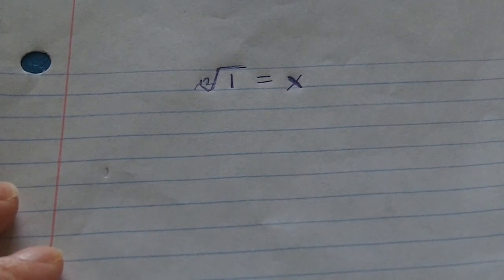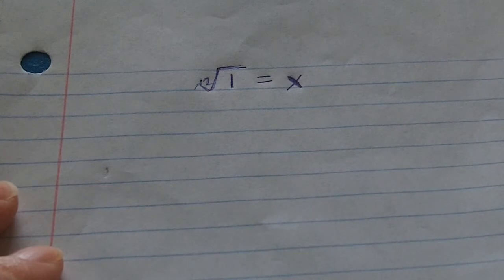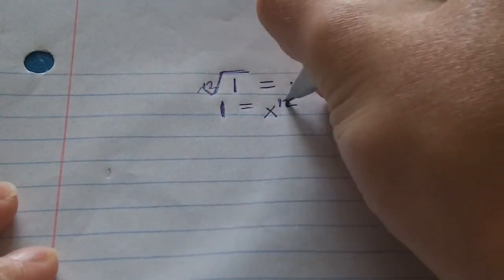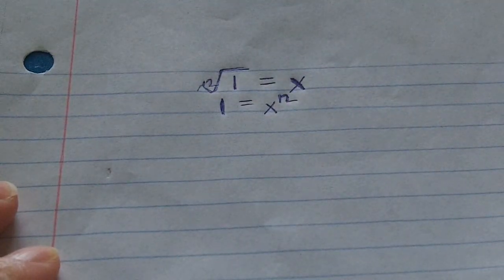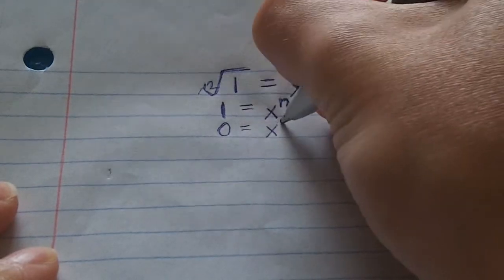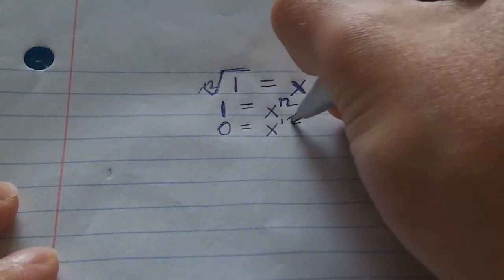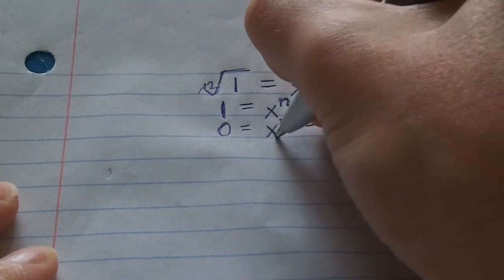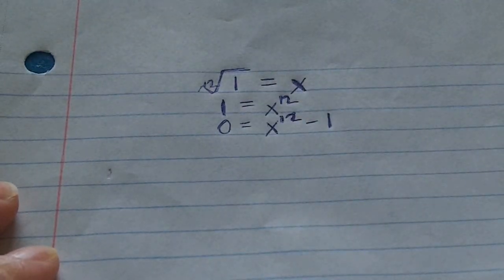We can simply raise both sides of this equation to the power of twelve in order to cancel out this radical. So therefore one equals x to the twelfth, and then quite intuitively we can subtract one from both sides, and we end up with a polynomial, x to the twelfth minus one, and we set that equal to zero.